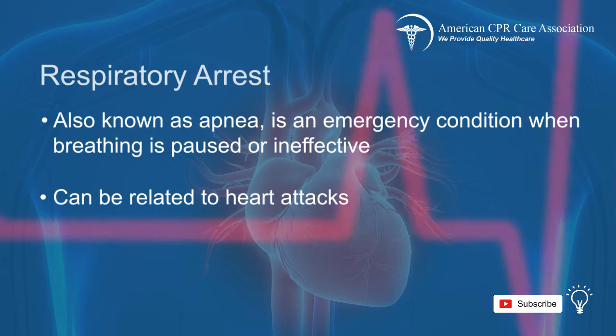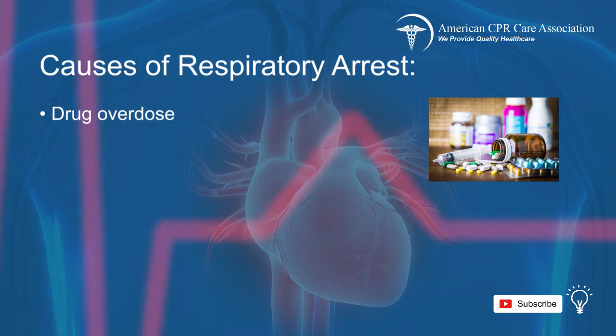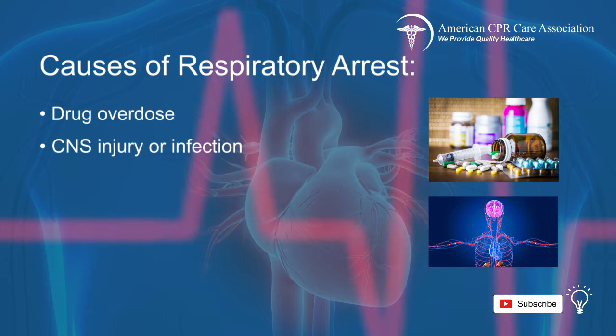Respiratory arrest can come about from various factors, including an overdose of drugs like heroin, morphine, codeine, narcotics, anesthetics, and barbiturates. It can also be brought on by injury or infection in the central nervous system, or CNS, which alters the pressure of the cerebrospinal fluid.